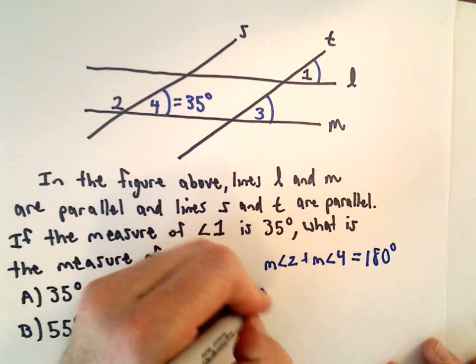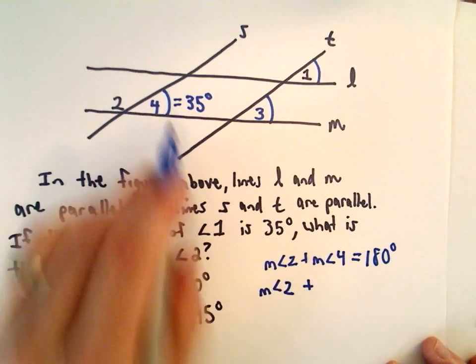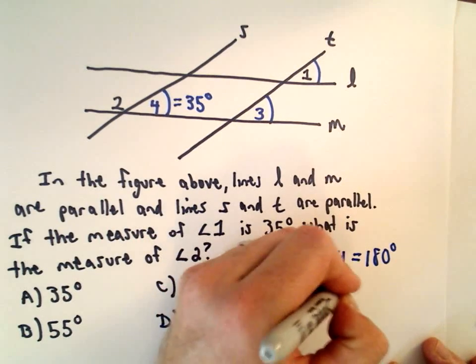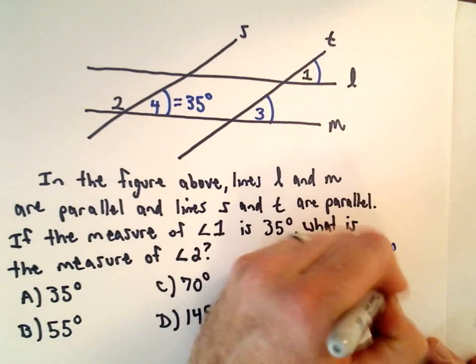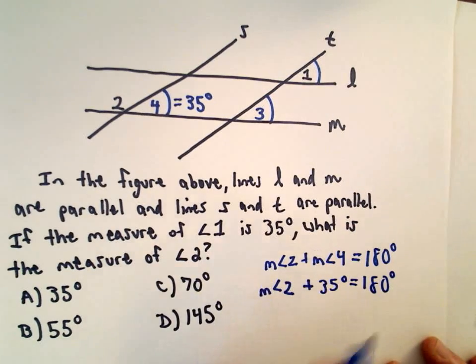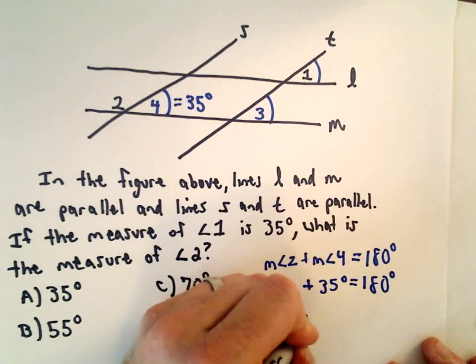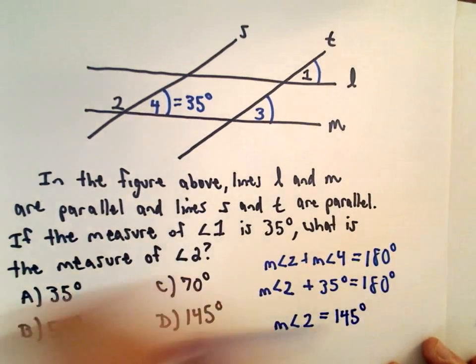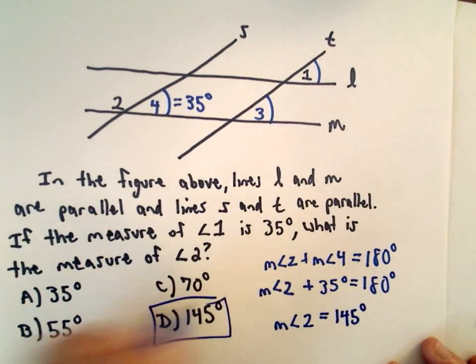Again, we just said that the measure of angle 4 is 35 degrees. So we can subtract 35 degrees from each side and get that the measure of angle 2 would have to be 145 degrees, so it would be answer choice D.